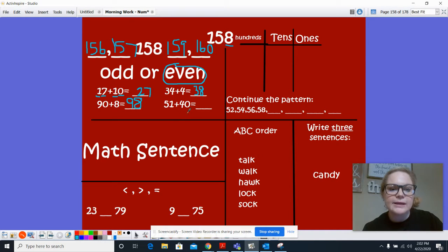51 plus 40. So let's look at our ones place first. So in the ones place for 51 is a 1. In the ones place for the number 40, we have a 0. So what is 1 plus 0 for our ones place? 1, right? That's easy. Now let's look at our tens place. We have a 5 in our tens place plus a 4 in our tens place. So what is 5 plus 4? 9. So 9 in my tens place and a 1 in my ones place makes the number 91.